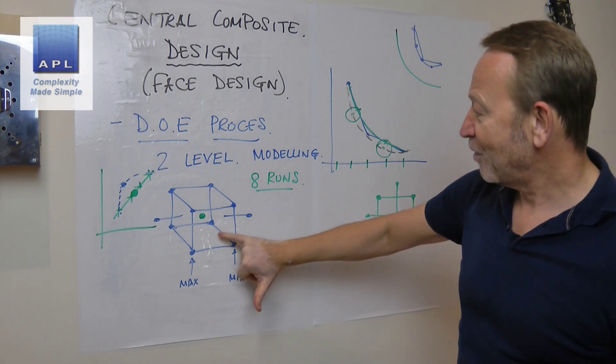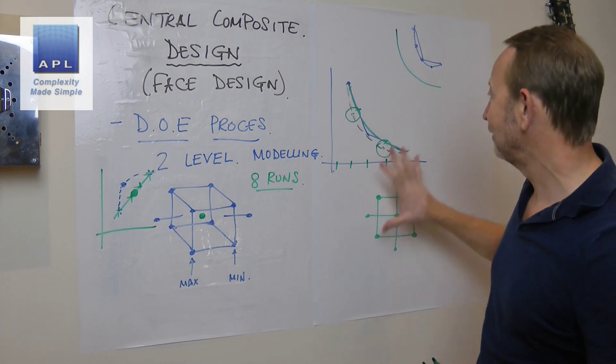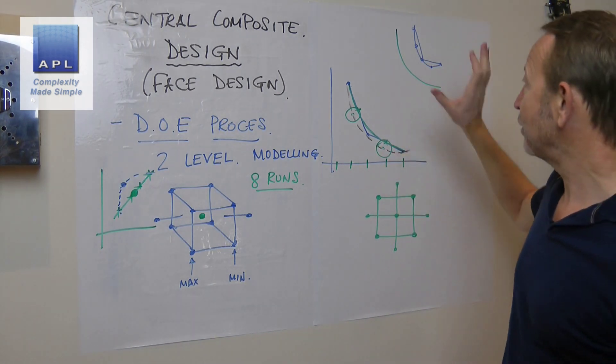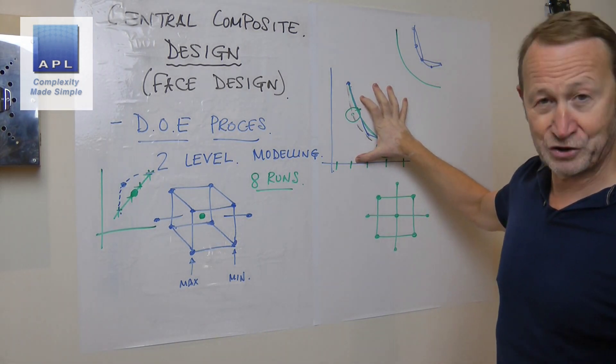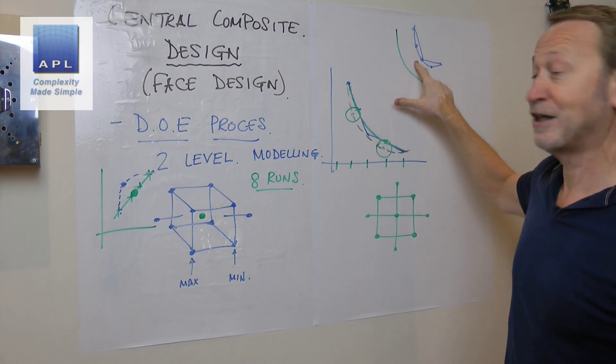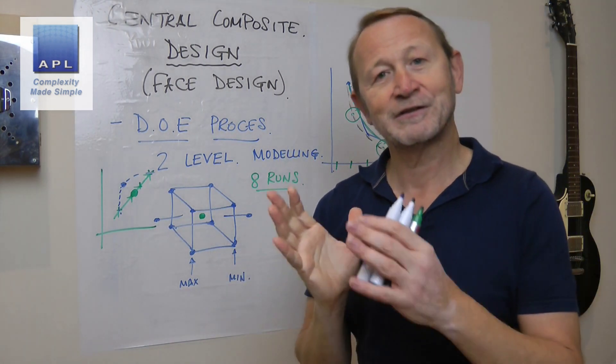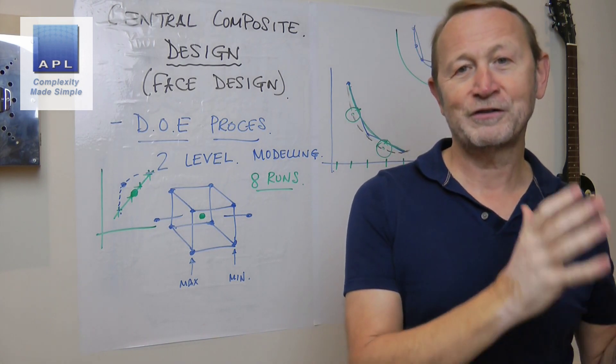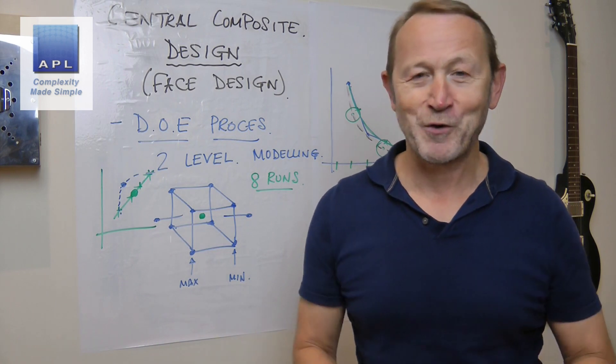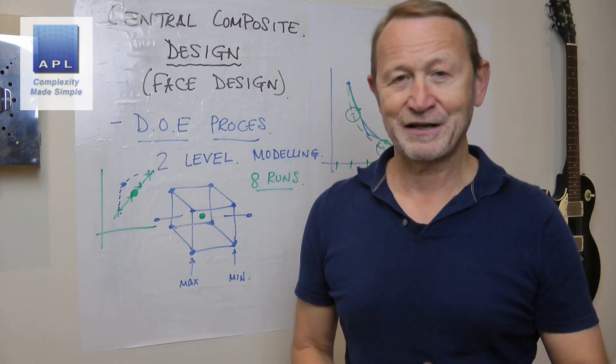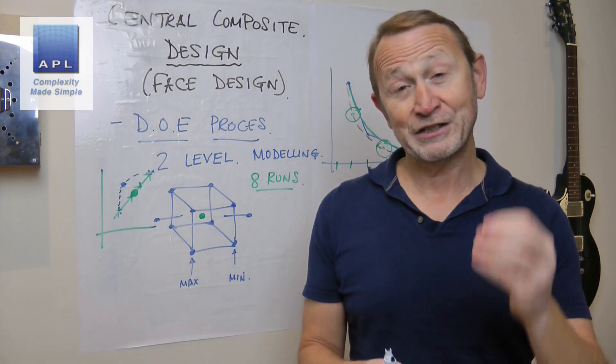I'm giving up data with the face design. I'm only testing in three places. Corner points and kind of center points here. I'm only testing in three places. And I gave up data. And I have to give up information when I do that. And sometimes that information is crucial to getting the right model. So there's the central composite face design. There's the full central composite design. You collect more data. You get more information. Sometimes you need that additional information. And that would be one of the reasons why you needed a tighter curve.